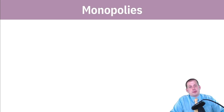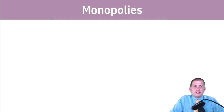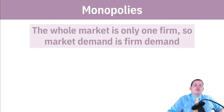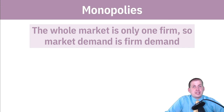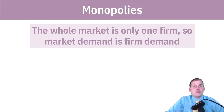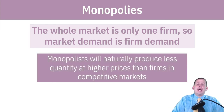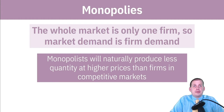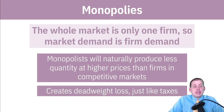Another way of gaining market power — one of the most popular and what most companies would love to do, and what governments try to prevent — is to create a monopoly. If you can create a monopoly, by definition the entire market for what you're selling is only one firm. The market demand becomes the firm's demand, so instead of being a price taker, you're the only company selling something and you can set the price to whatever you want. Monopolies will produce less at a higher price than firms in competitive markets, and this creates deadweight loss, just like taxes.